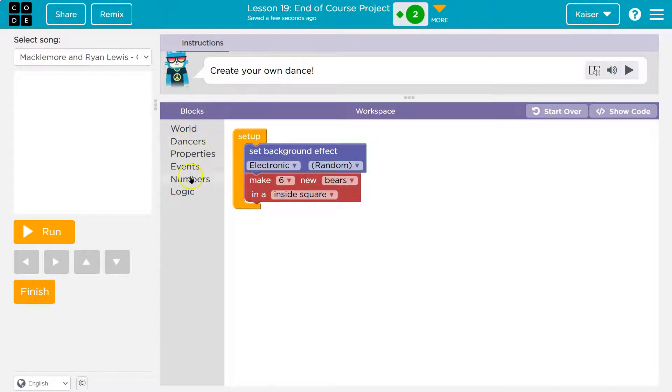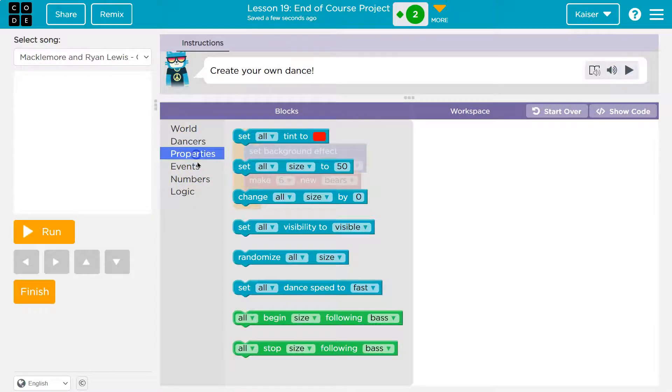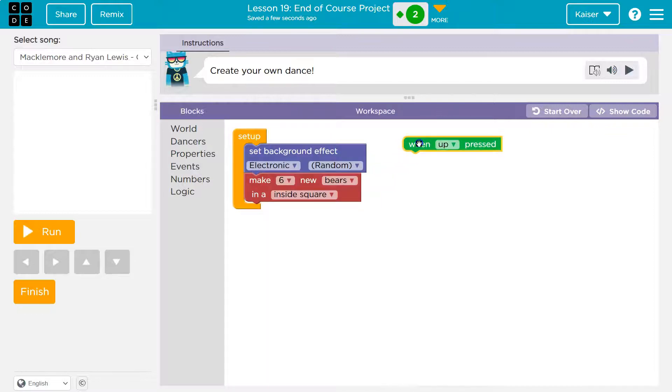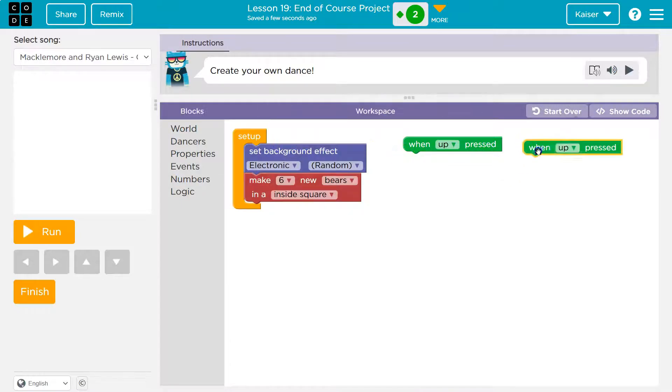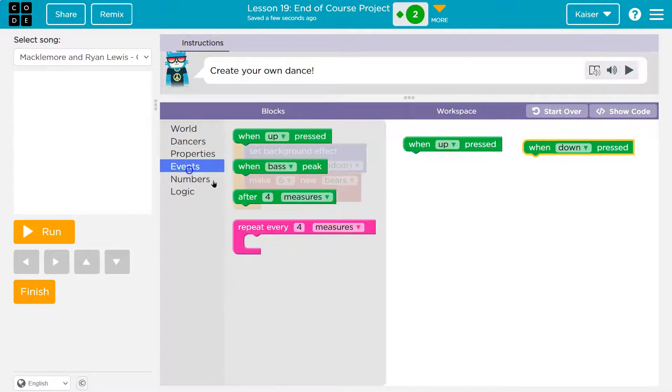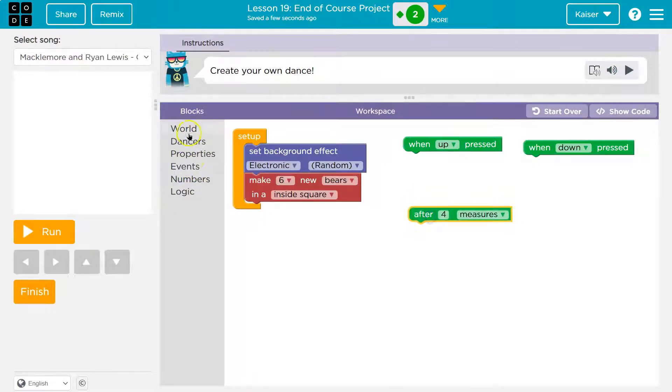Let's have some interactions with the events. When someone presses up and when someone presses down, I'm going to do maybe. We have lots of events we can use. I love this. So, at ten measures, maybe.